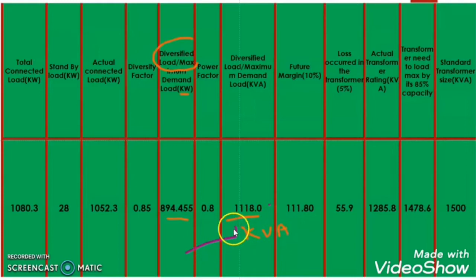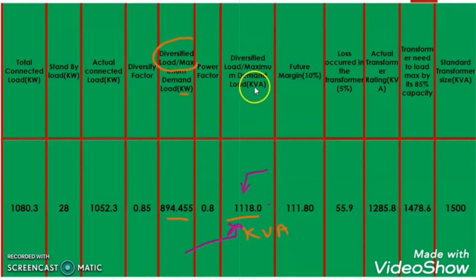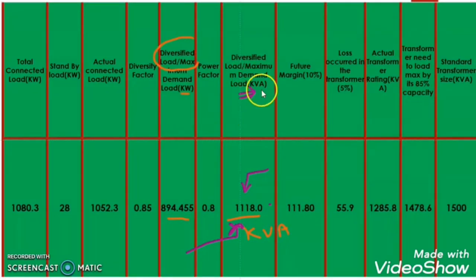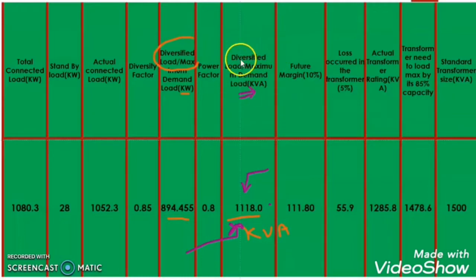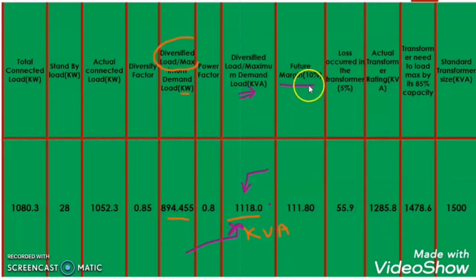If we select the same size of transformer as the diversified load, we cannot add any future load, because the kVA rating of the transformer would be exactly equal to the total load. As I mentioned in my previous video, a transformer is a one-time investment — we cannot change it frequently. So we always need to consider a future margin. Generally, 10% to 15% is taken as a future margin. I took the future margin as 10%, which is 111.8 kVA.